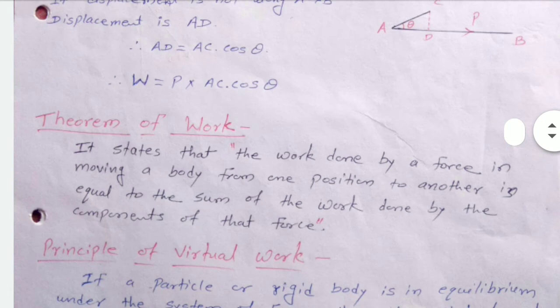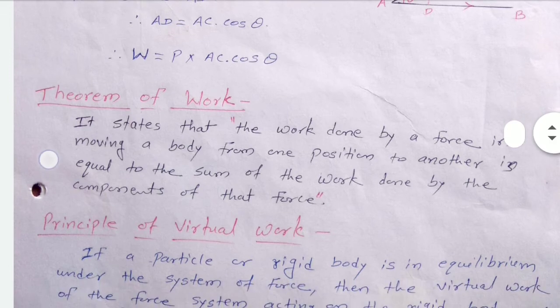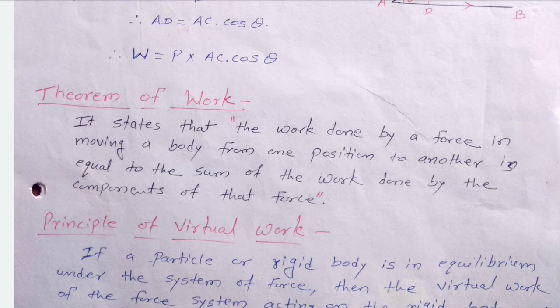So what is the theorem behind the work? It states that the work done by the resultant force in moving a body from one position to another position is equal to the sum of work done by the components of the forces. As we see, cosθ is the component of the force along AC, so the displacement from one position to another is the work done by the sum of all the forces or components of the forces.